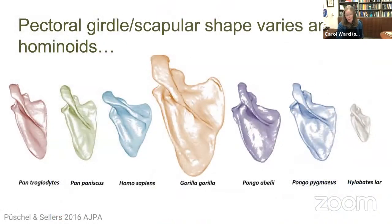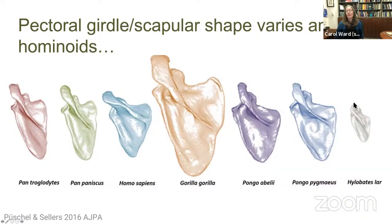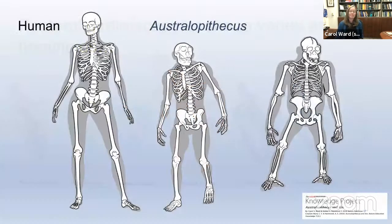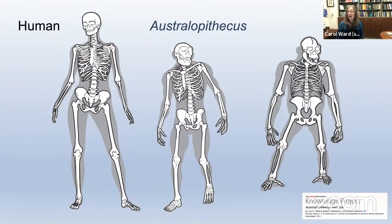Torso shape and upper limb function aren't tightly coupled — humans and gibbons have fairly similar thorax shapes but very different scapulae, with gibbons having a more chimpanzee-like long narrow scapula and superiorly oriented glenoid fossa. So torso shape doesn't seem to relate to climbing per se. Rather than Australopithecus having an ape-like rib cage, the reconstruction should show a short, stocky, mostly human-like body shape — much more modern than you'd expect just from looking at living apes.